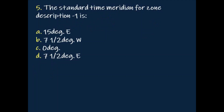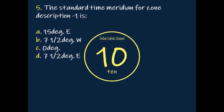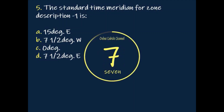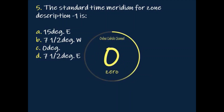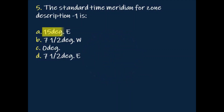Question: The standard time meridian for zone description negative 1 is? Answer: 15 degrees east.